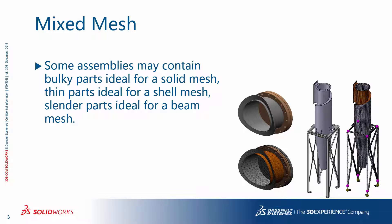Some assemblies may contain bulky parts ideal for a solid mesh, thin parts ideal for a shell mesh, and slender parts ideal for a beam mesh. The bigger the assembly, the more important it becomes to take advantage of mixed meshing, because meshing a large assembly with just solid elements may not be practical or sometimes even possible.